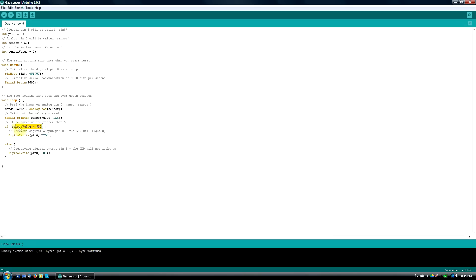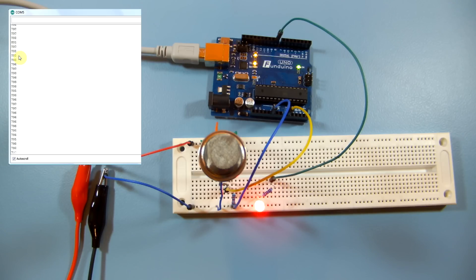You can adjust sensitivity by changing the sensor value in the code to match your needs. Now you know how to use a gas sensor with the Arduino.